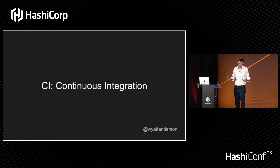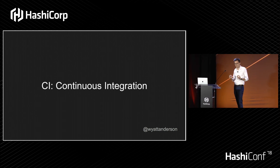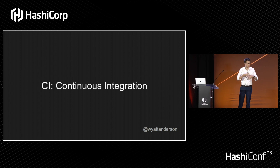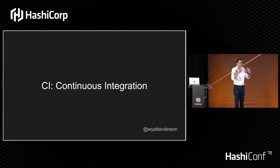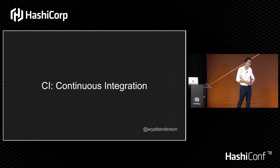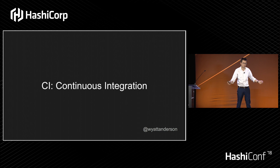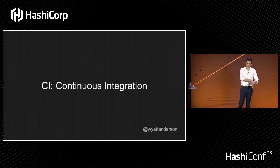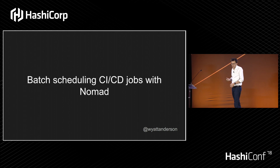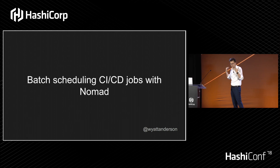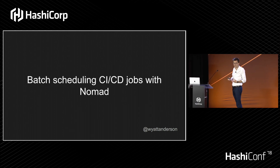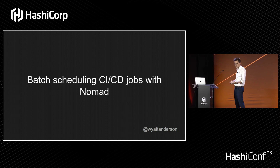CI stands for continuous integration. Philosophically, for us, that means we want our developers merging and integrating their changes with every other developer's changes as frequently as possible, and we want to be testing those as frequently as possible. We don't want long-running feature branches or submarine development. We want all that code integrated into trunk, tested, and hopefully deployed as quickly as possible. We do a lot of batch scheduling of our CI and CD jobs with Nomad.